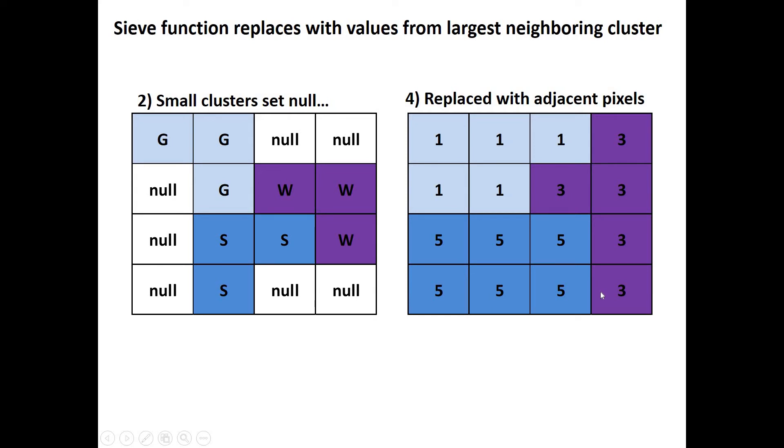One thing to know about the sieve function is that when it goes to replace the pixels it replaces them with the adjacent values that are from the largest neighboring cluster. So the largest adjacent cluster gets priority.